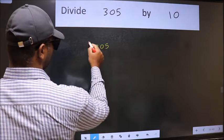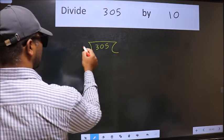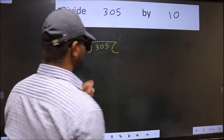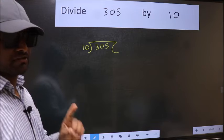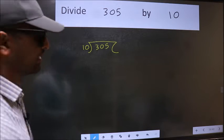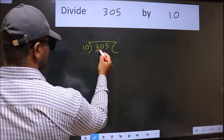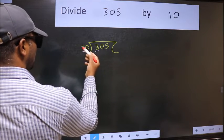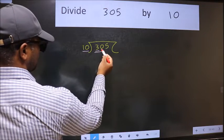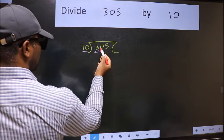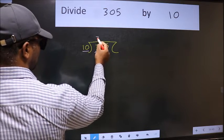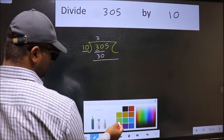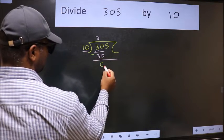305 and 10 here. This is your step 1. Next, here we have 3 and here 10. 3 is smaller than 10, so we should take two numbers, 30. When do we get 30 in 10 table? 10 times 3 is 30. Now we should subtract. We get 0.